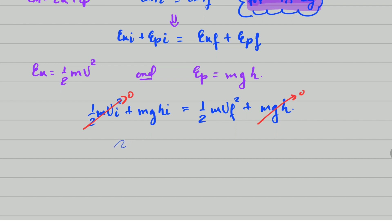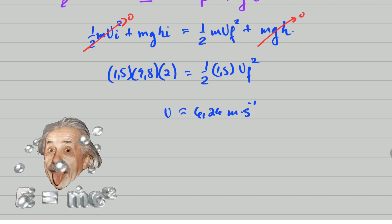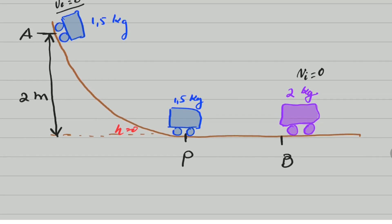Substituting the values: mass is 1.5 kg, acceleration due to gravity is 9.8 m/s², and the height is 2 metres — all given. Solving for the final speed of the trolley at point B gives 6.26 metres per second. That is the answer for this question.